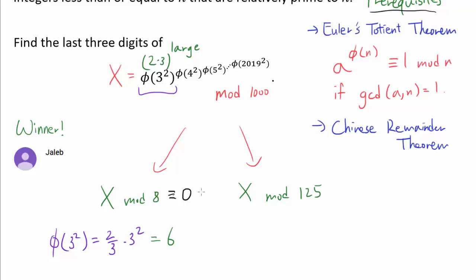X mod 125 is certainly much harder. So how do we go about this one? Realize the base of this exponent tower, 6, and 125 are relatively prime to each other. So we can apply Euler's Totient theorem, which states that a to the phi of n power is congruent to 1 mod n if a and n are relatively prime. So we only have to compute the top portion of this tower. This part, let's call this Y.